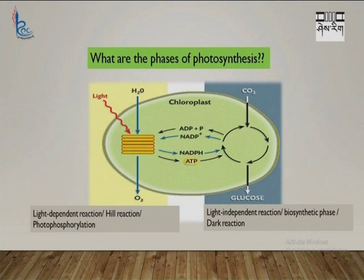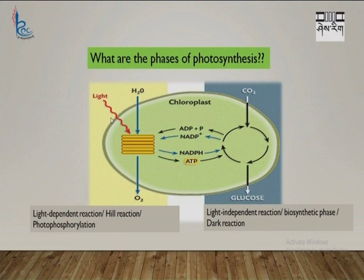Let us move on with the phases of photosynthesis. We have light-independent reaction and light-dependent reaction. Light-dependent reaction, also called the Hill reaction, named after the scientist, also known as photophosphorylation, occurs in the membranes of the thylakoid. It is called light-dependent because it utilizes light energy for the process. It is called photophosphorylation because this process is involved in the synthesis of ATP by adding phosphate in the presence of light.